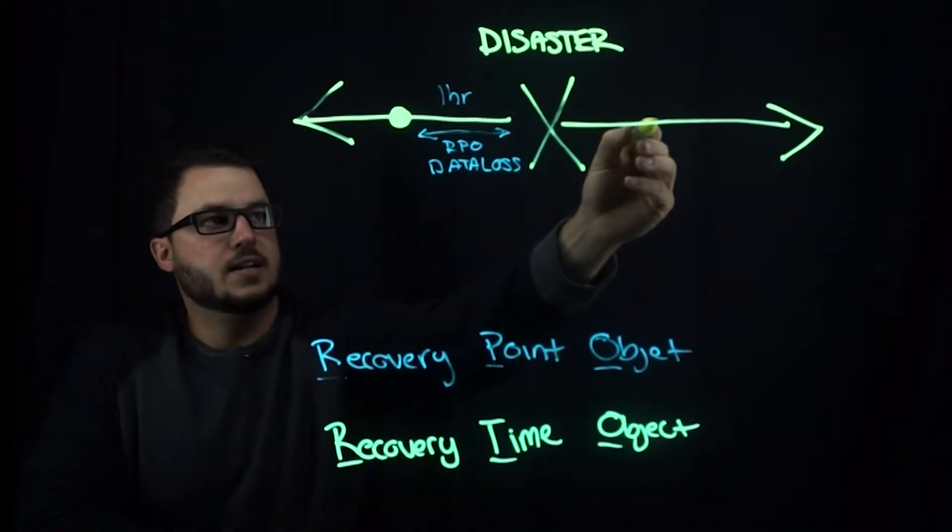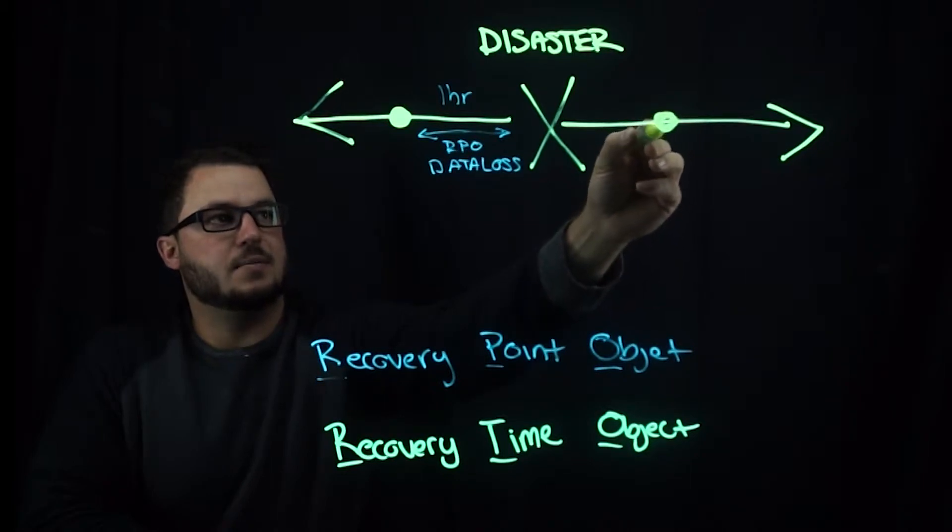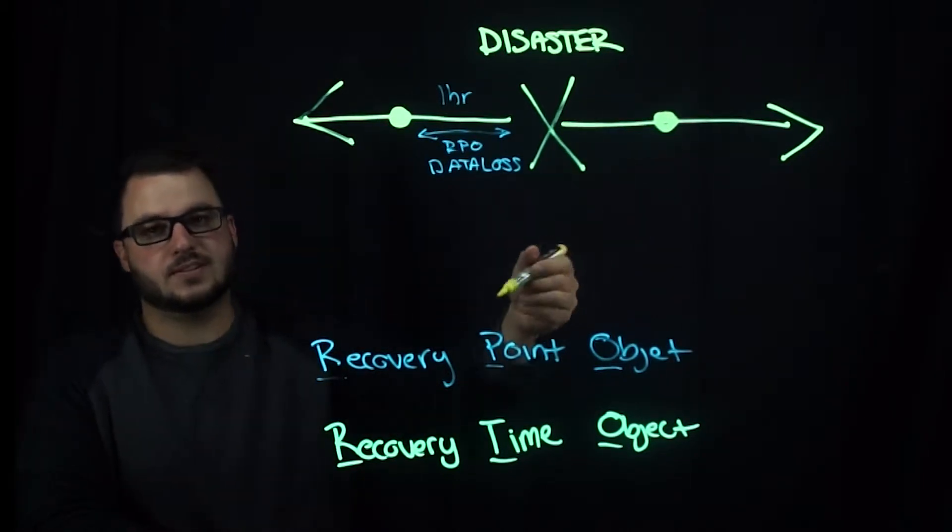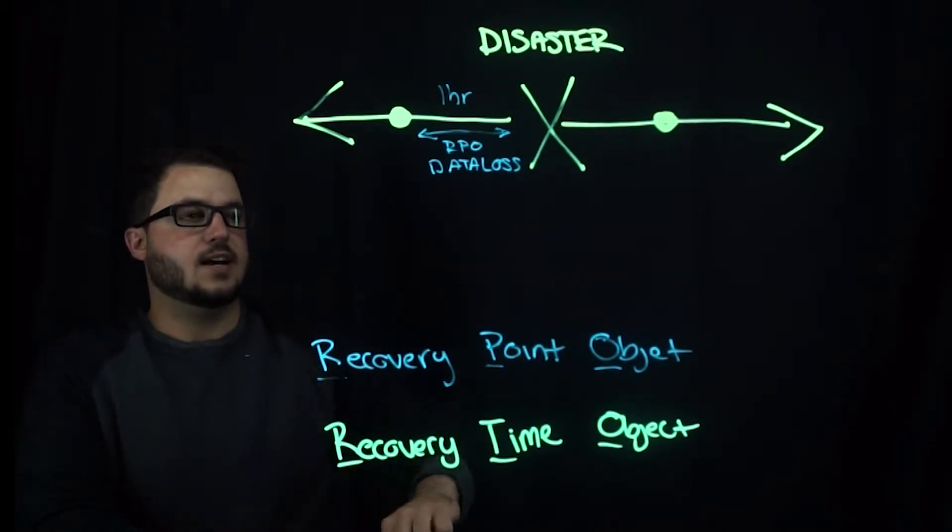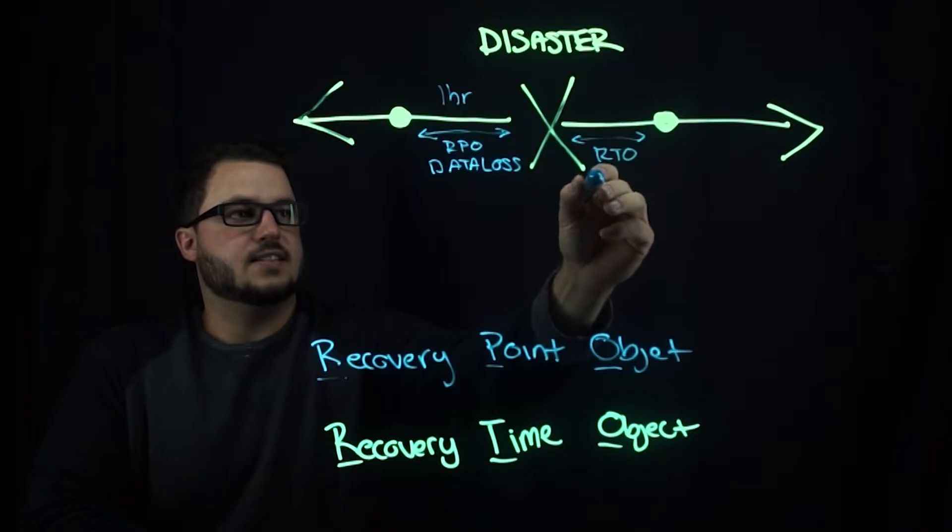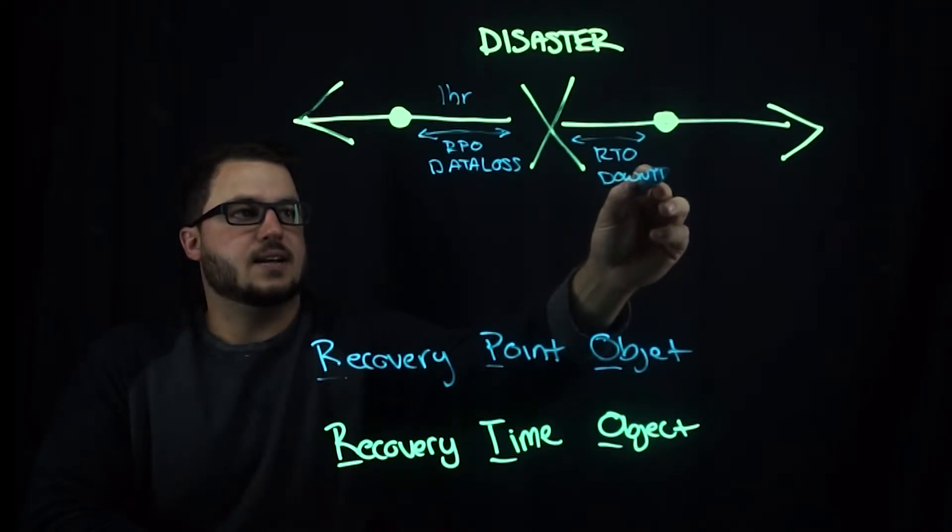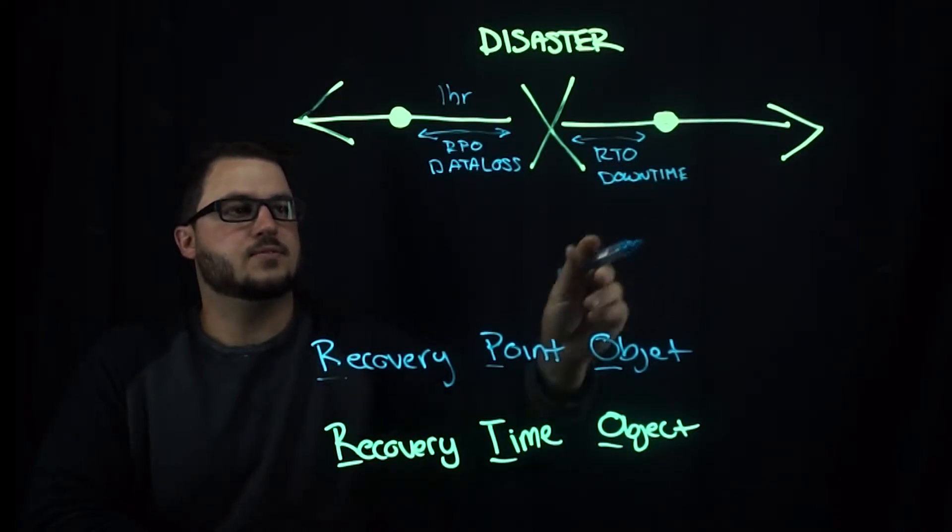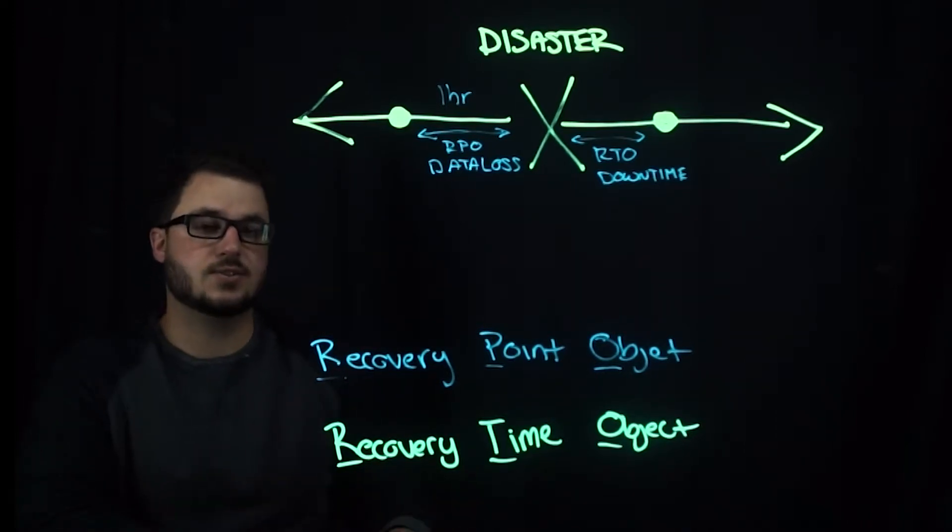Now, if our recovery happens over here, so our application is back up and running, this part of our timeline is our RTO. And this translates to downtime for your application and essentially your users.